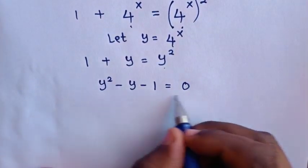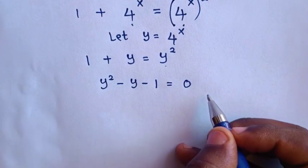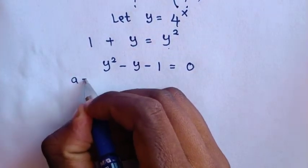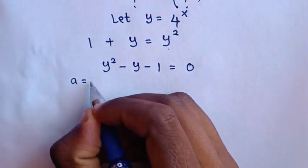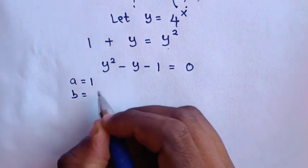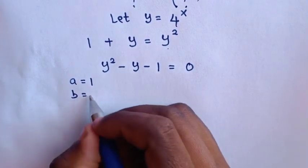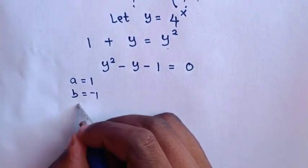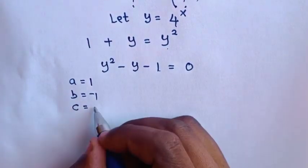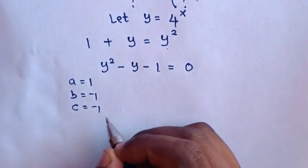This is a quadratic equation where a equals the coefficient of y^2, which is 1; b equals the coefficient of y, which is -1; and c equals the constant, which is -1.